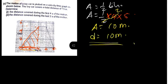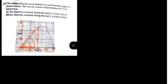That is the answer for part one. Part two says we need to find the distance covered during the last two seconds of the motion. Area = half × base × height. We are now talking about the last two seconds — this triangle here — where this is six and this is eight.